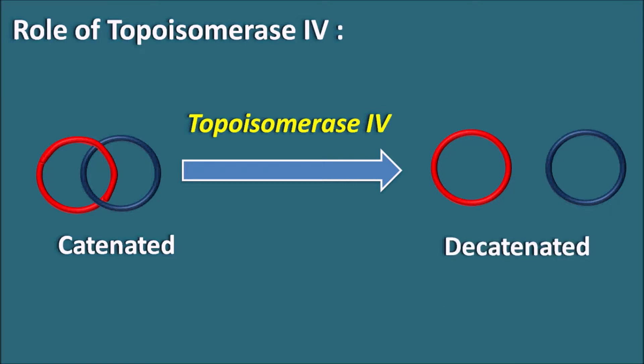Fluoroquinolones can inhibit topoisomerase-4 so that they can inhibit the release of daughter DNA. In this way, fluoroquinolones can inhibit both topoisomerase-2 as well as topoisomerase-4, thereby inhibiting DNA replication as well as the release of daughter DNA.